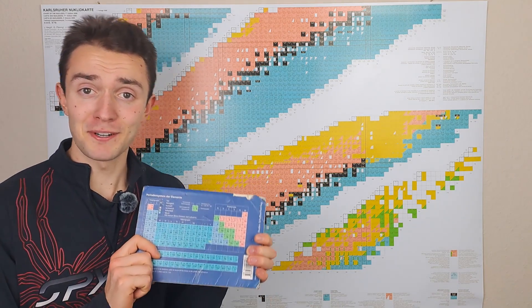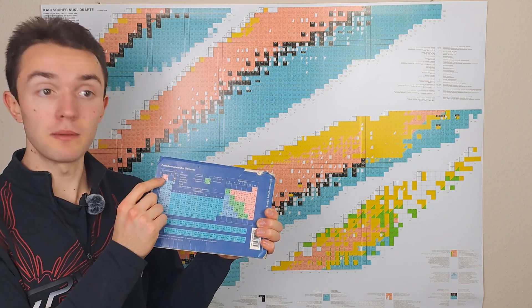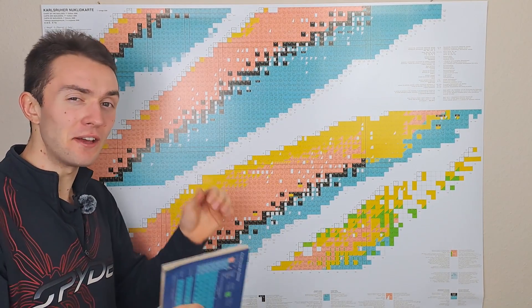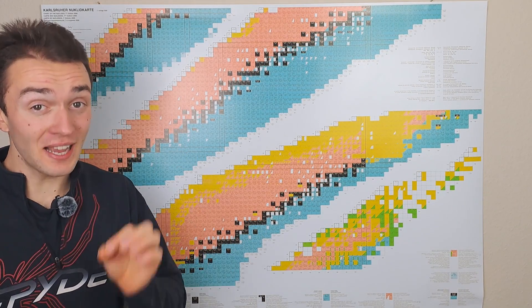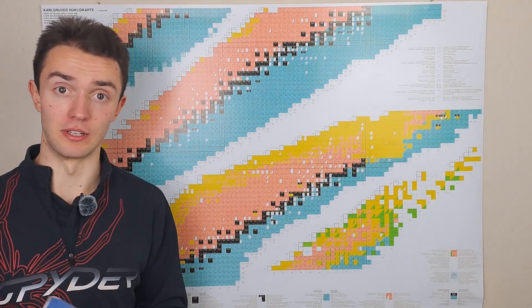What is the Chart of Nuclides? The Chart of Nuclides is basically like a periodic table, but on steroids, because the periodic table contains every element from element number one to element number 118, and the Chart of Nuclides contains every isotope of every element up to 2006, because I don't have a newer version of this.